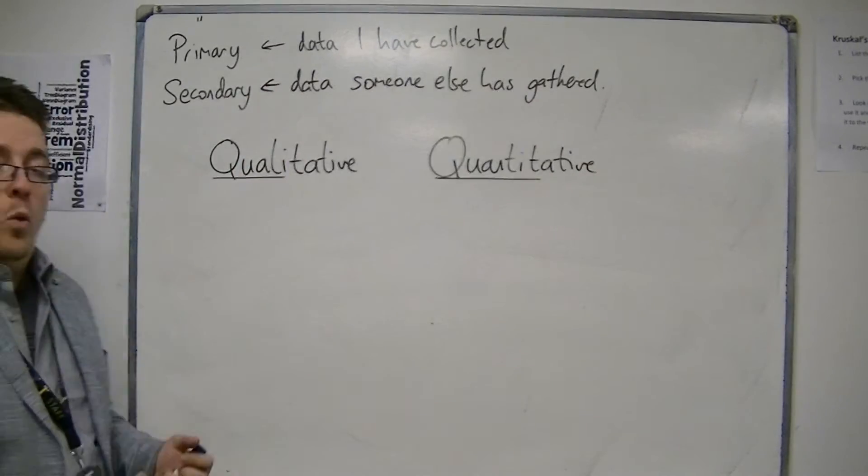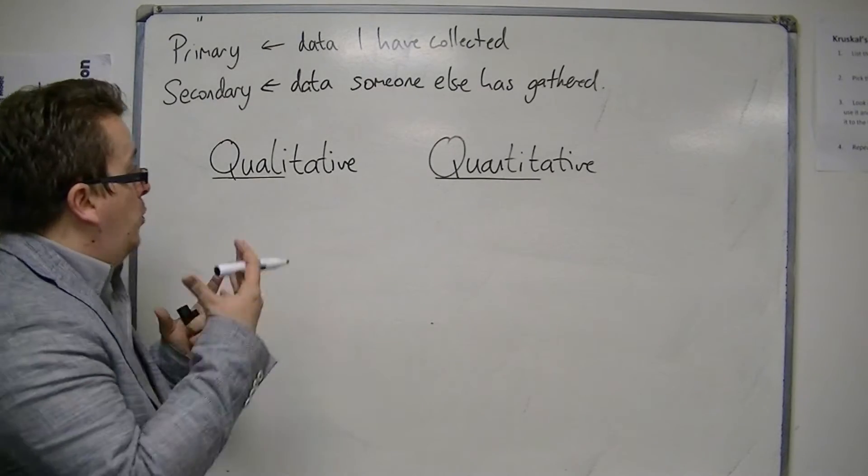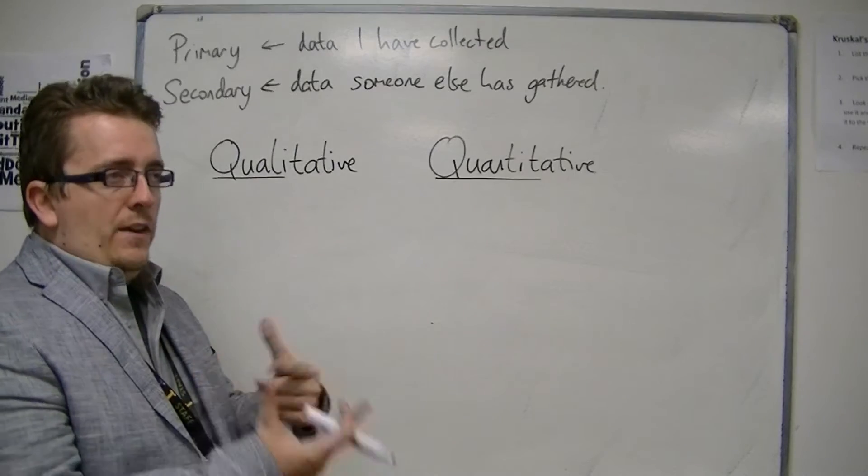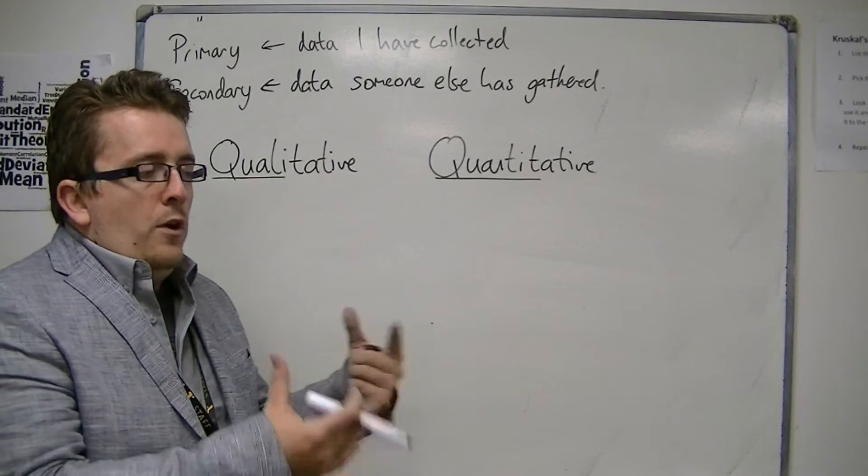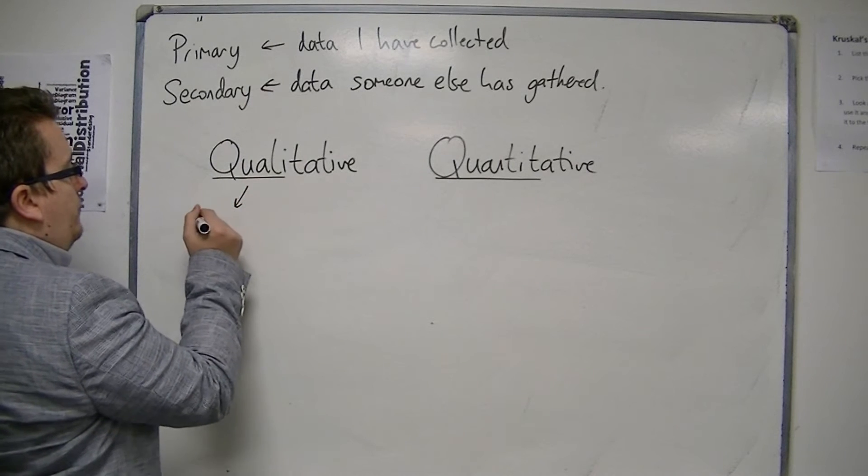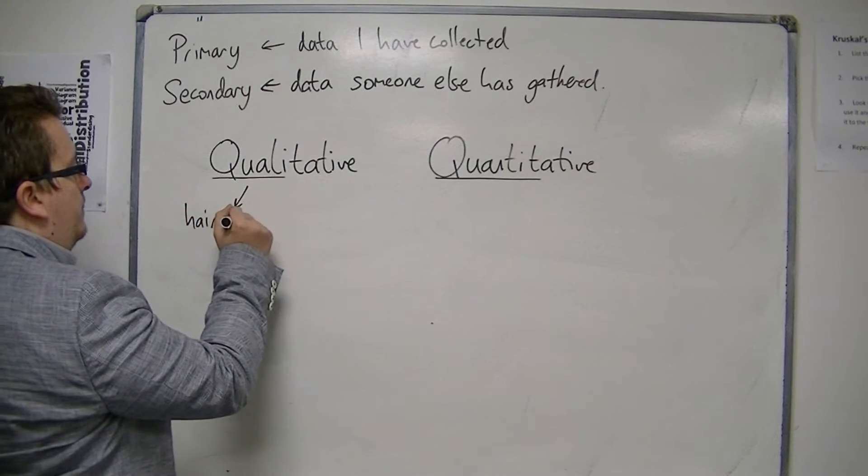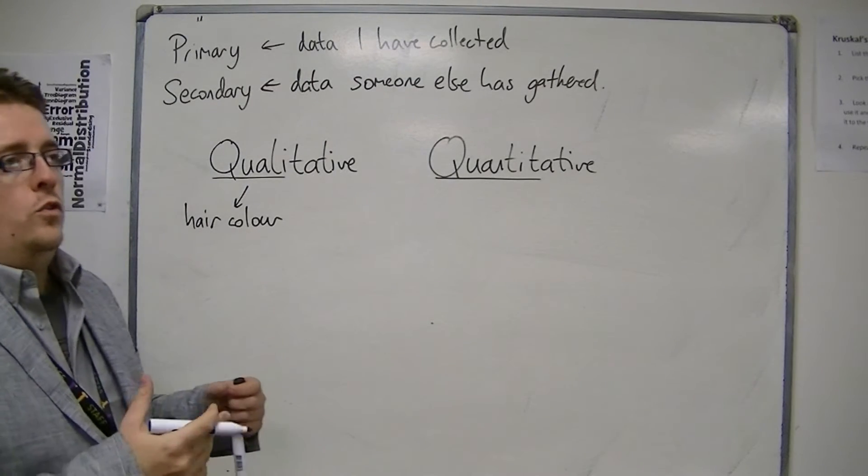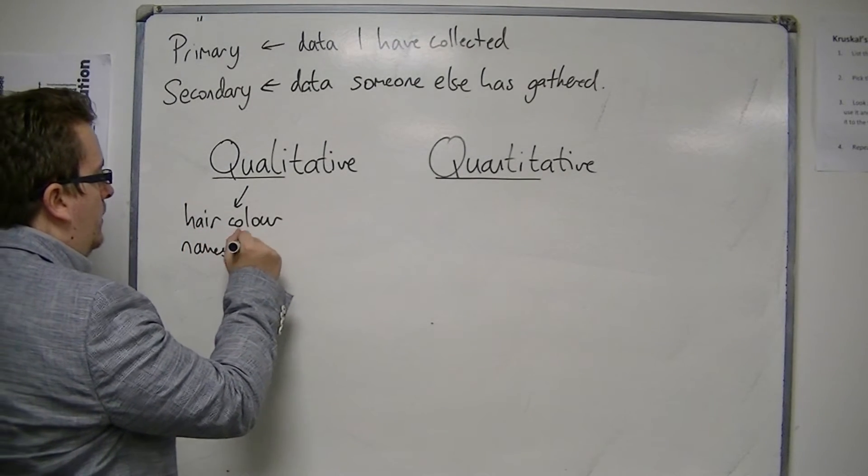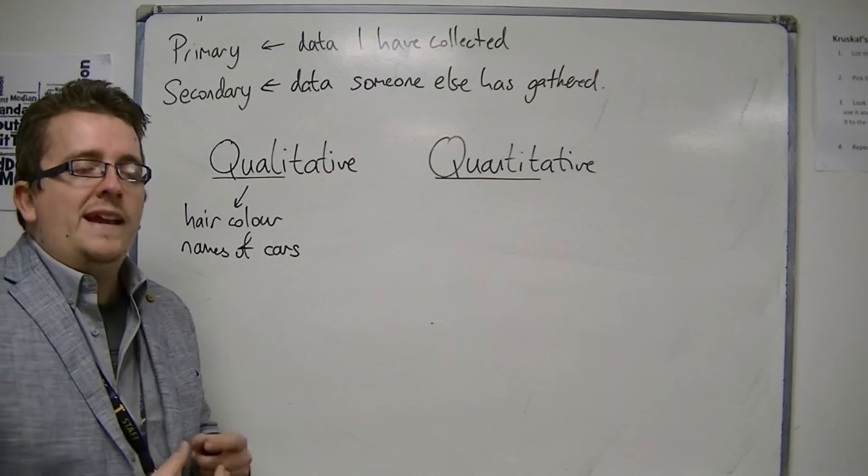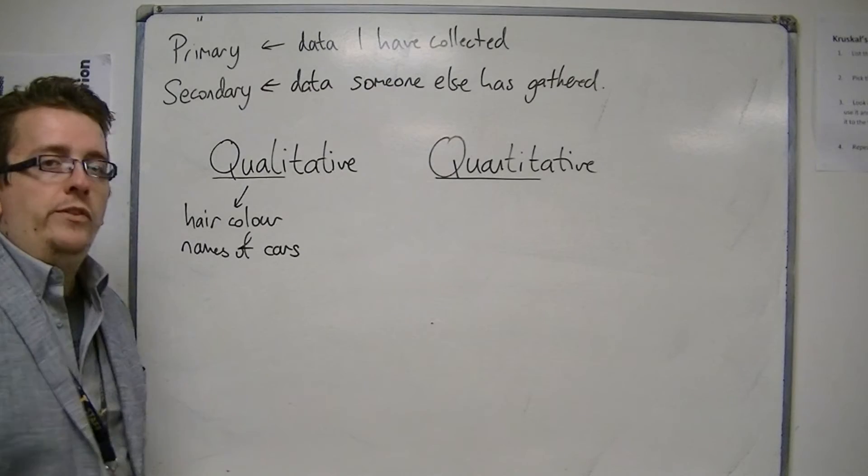If you're thinking about qualitative data, then we're talking about variables that do not have numerical value. So things like hair color or eye color or names of cards. These are qualitative. I cannot put a measure to them.